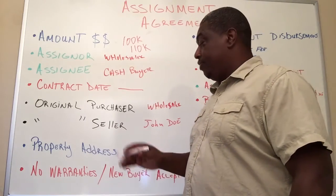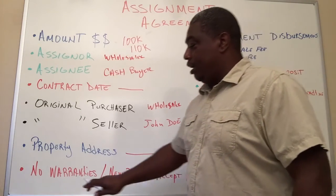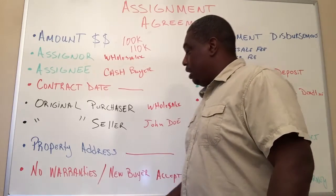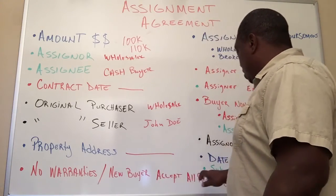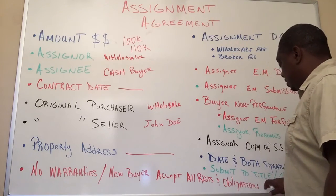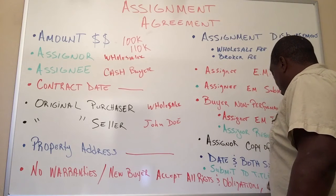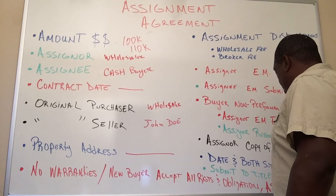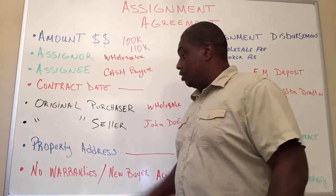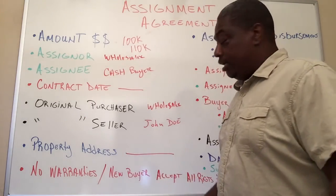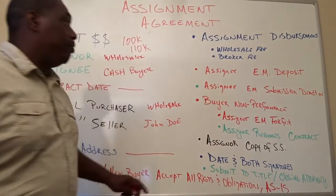Have your attorney review the documents. One thing that I read that is very important is that there are no warranties. The new buyer accepts all rights, obligations, and conditions of the property, including that the property is being purchased as-is. So that refers back to the no warranties clause — make sure you have this line on your assignment agreement.